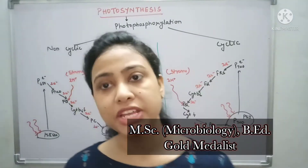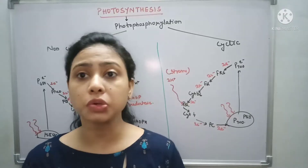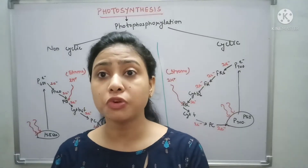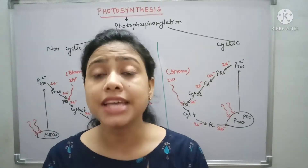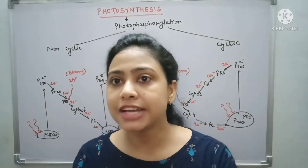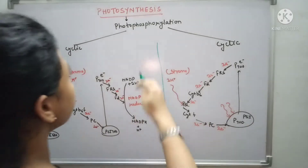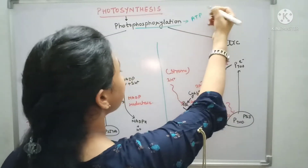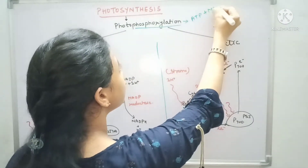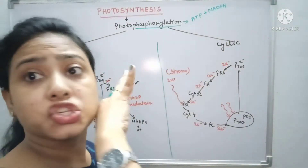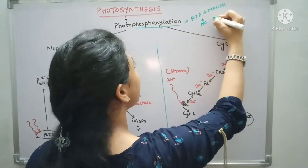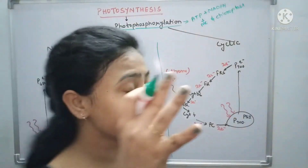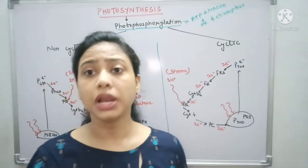Hello everyone, this is Taneja Gupta, welcome to my channel. I'm back with a new topic of photosynthesis — specifically photophosphorylation. In my previous video I talked about the site of photosynthesis and the light reaction, or Z scheme. Now, phosphorylation means the formation of ATP and NADPH, and it generally takes place in the mitochondria as well as the chloroplast.